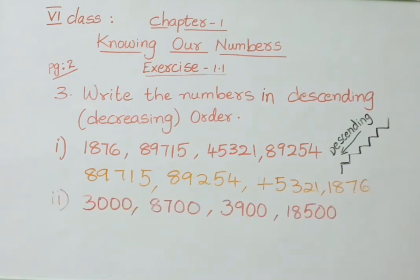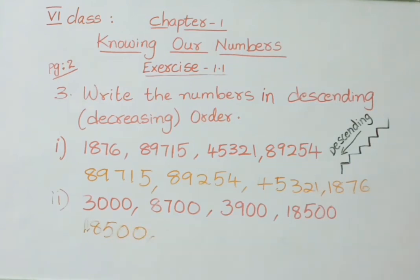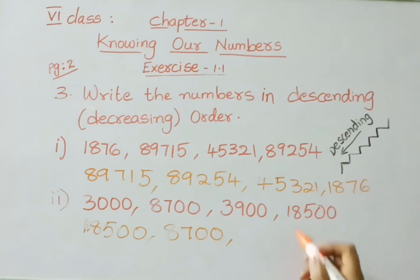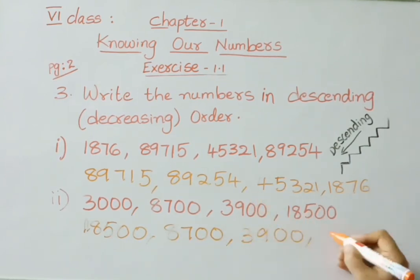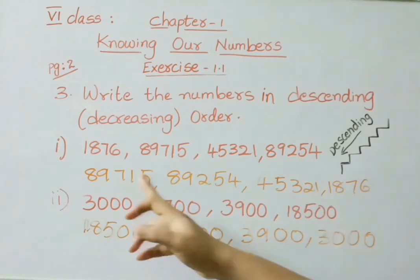See the second sum for descending order: 3,000, 8,700, 3,900, and 18,500. The 5-digit number 18,500 is the greatest — write it first. Among the remaining 4-digit numbers, 8,700 is the greatest. Then 3,900 is greater than 3,000. So the descending order is: 18,500, 8,700, 3,900, 3,000. We arrange the numbers from highest to lowest.